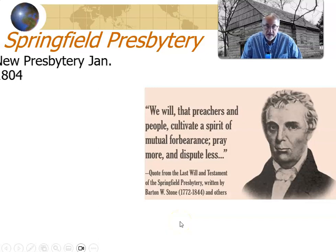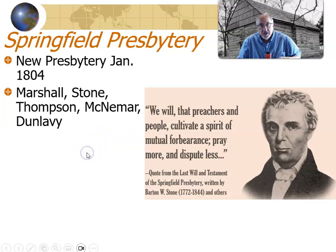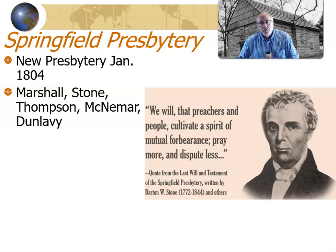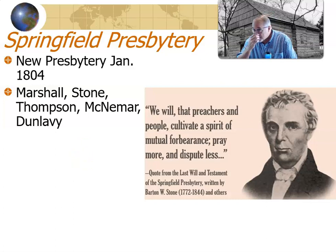This causes the five ministers to meet in January of 1804 at the Cane Ridge Meeting House. They meet there and make their own new presbytery. Marshall, Stone, Thompson, McNamara, and Dunleavy meet there and say, let's form a new presbytery. They're going to call it the Springfield Presbytery — after Springfield, Ohio, the ones who kicked them out. They will have 15 congregations between these five ministers following them into this presbytery.